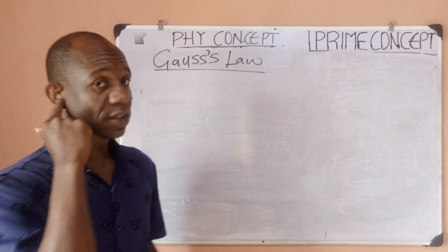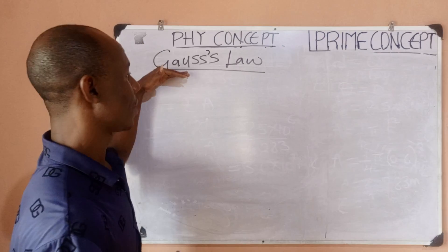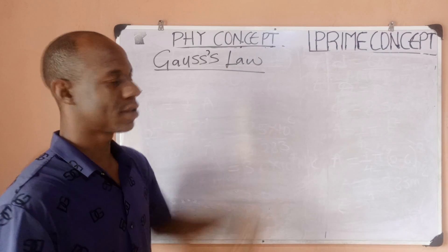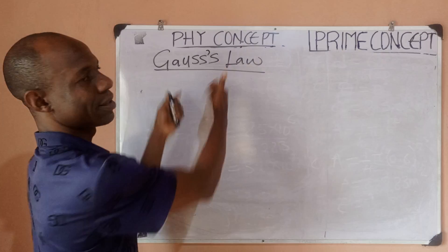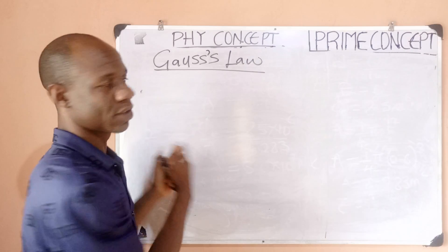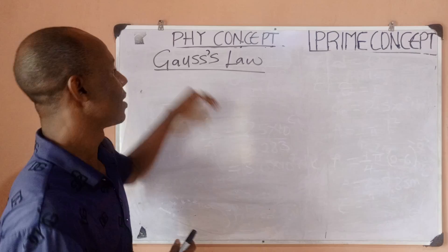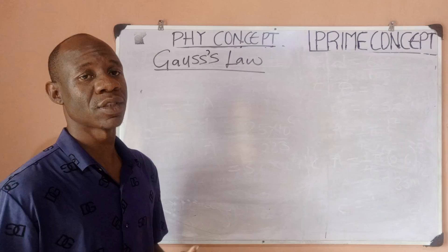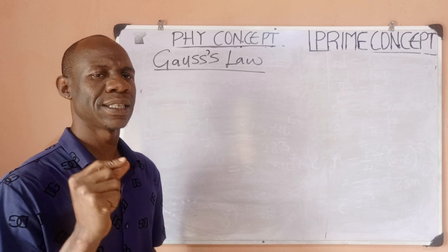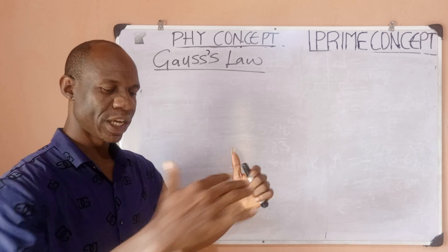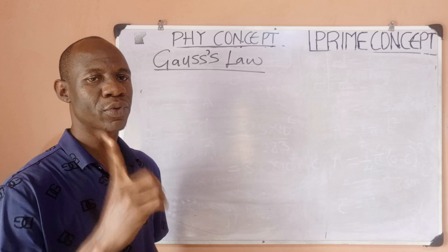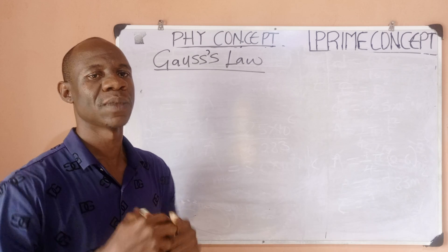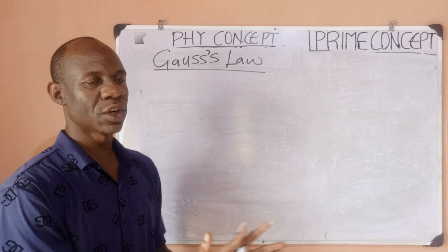Hello guys, this is Prime Concepts. I want to explain the concepts given by Gauss, which we know as Gauss's Law. We will be applying this to electrostatics or electric fields. Gauss's Law states that the net flux through a closed surface is proportional to the charge enclosed within the surface.